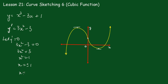When x equals 1, y will be equal to 1 minus 3 plus 1. 1 minus 3 plus 1 is minus 1, so that's the point (1, -1). And when x equals minus 1, y equals minus 1 plus 3 plus 1, so that will be 3. So the other point is (-1, 3).